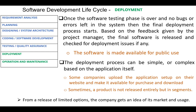First, the deployment phase. Once the software testing phase is over and no bugs or errors are left in the system, then the final deployment process starts. Based on the feedback given by the project manager, the final software is released and checked for deployment issues, if any. In this phase, the software is made available for public use.